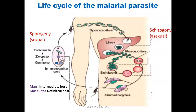Now we'll come to the life cycle of the malarial parasite. This you have studied elaborately in your microbiology classes, so I'm just going to brief the life cycle that is relevant to understanding the drugs. The causative organism is Plasmodium, the definitive host is the female Anopheles mosquito, and the intermediate host is man. The part of the life cycle occurring inside the mosquito is called the sexual sporogony, and that occurring in man is called the asexual schizogony.